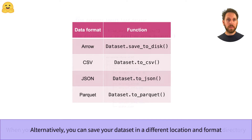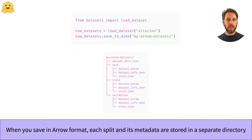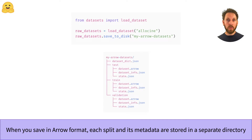To save a dataset or a DatasetDict object in the Arrow format, we use the save_to_disk function. As you can see in this example, we simply provide the path we wish to save the data to, and the datasets library will automatically create a directory for each split to store the Arrow table and the metadata. Since we're dealing with a DatasetDict object that has multiple splits, this information is also stored in the dataset_dict.json file.